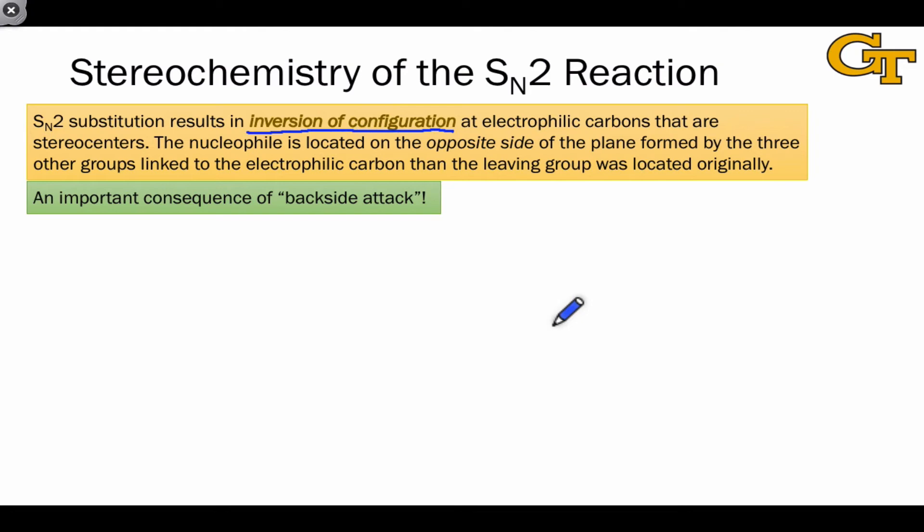SN2 substitution results in an inversion of configuration at the electrophilic carbon. More specifically, the nucleophile is located on the opposite side of the three other groups linked to the carbon from the side that the leaving group was on originally.